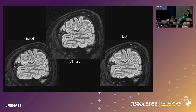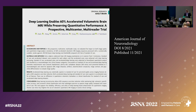When I increase the voxel size, I increase my contrast resolution. And even though I've increased the spatial resolution through deep learning, I still maintain that contrast resolution — and I've seen that on multiple occasions.